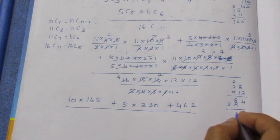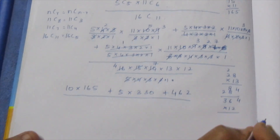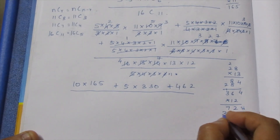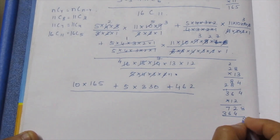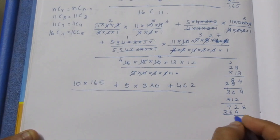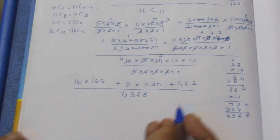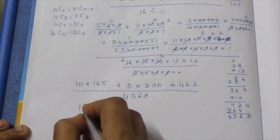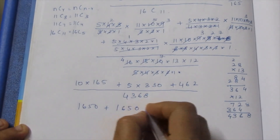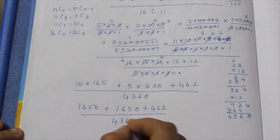Computing the numerator: 16C11 is in the denominator. The individual combination values work out as 7, 364, 8, 6, 3, 4, 3, 6, 8. Numerator: 1650 plus 15 plus 16 plus 462, divided by the denominator terms 4, 3, 6, 8.